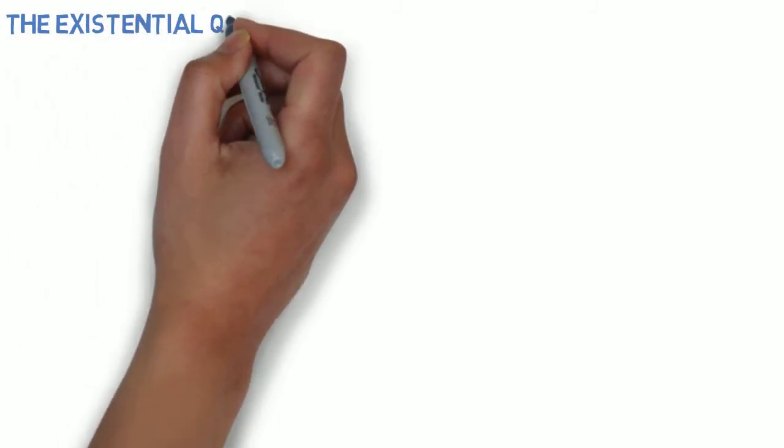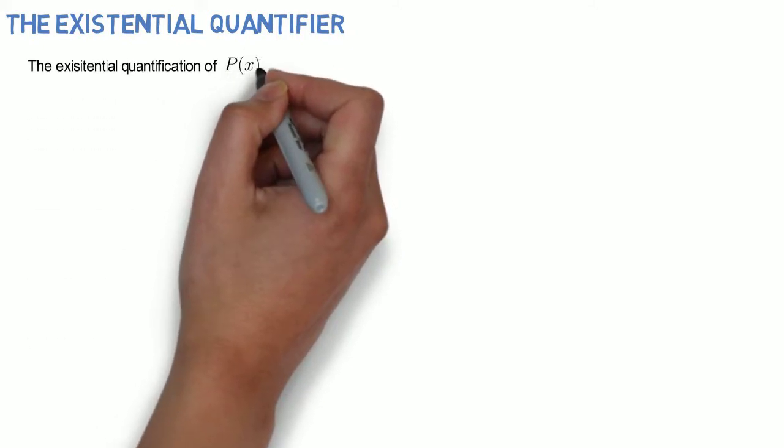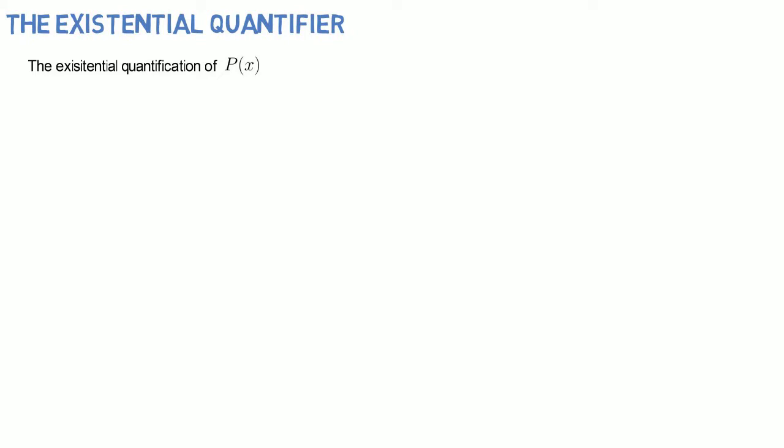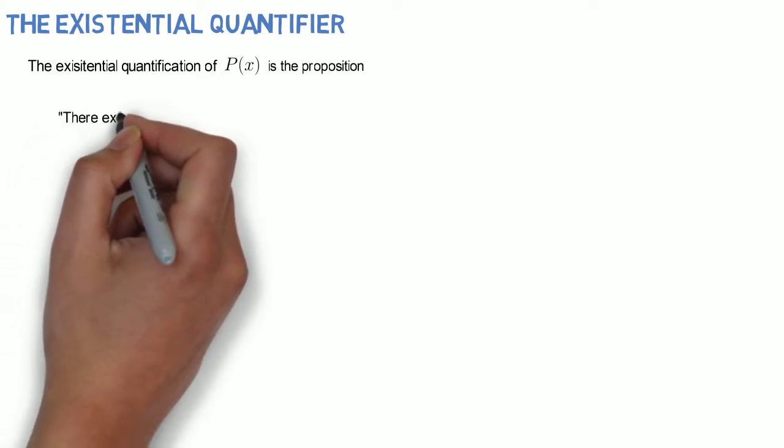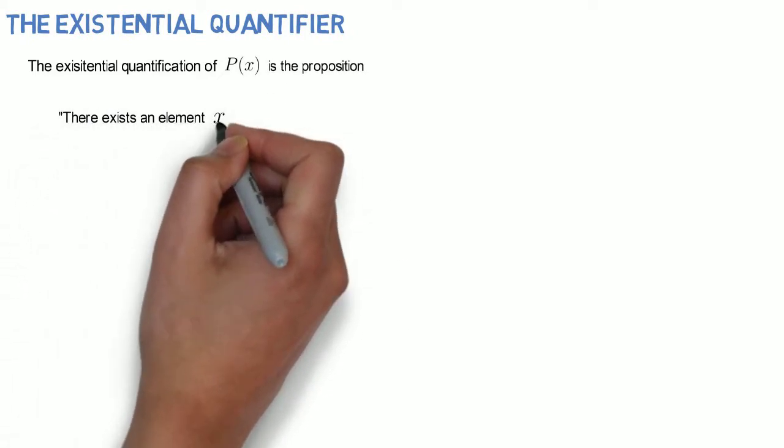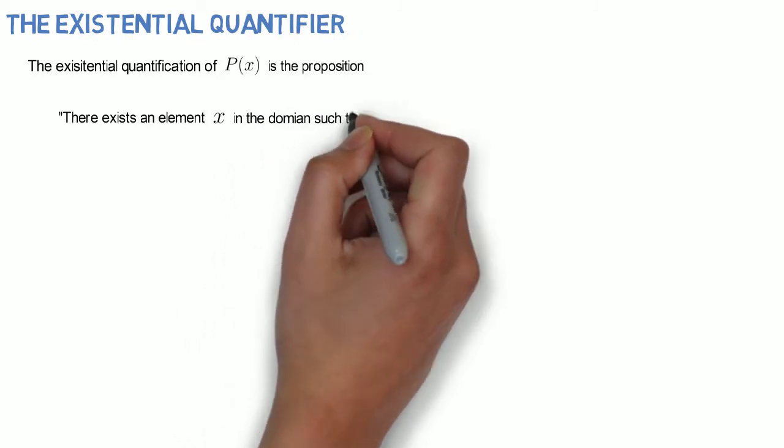In this video, we are going to talk about the existential quantifier. The existential quantification of P(x) is the proposition: there exists an element x in the domain such that P(x).